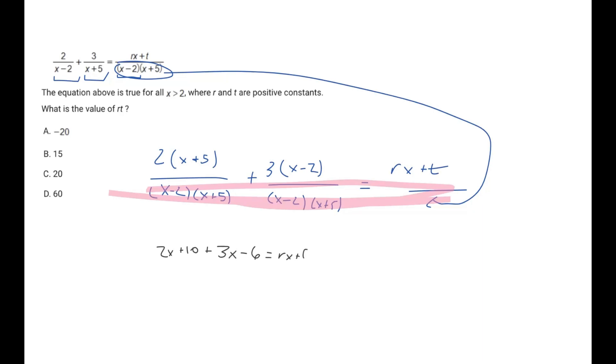This simplifies further, and it's actually kind of cool what happens. We have 2x plus 3x, we're just combining like terms, so 5x, and then 10 minus 6 is plus 4. If we look at this, what you'll find is that on the left side, we have an x term and a constant. On the right side, we also have an x term, rx, and a constant, t.